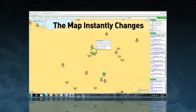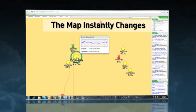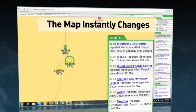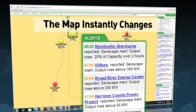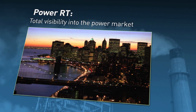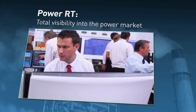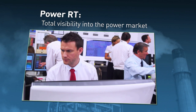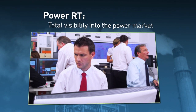As plants ramp up or shut down, the map instantly changes and alerts are set. With PowerRT, you get total visibility into what's driving the power market.